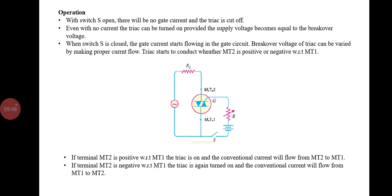In the operation: when switch S is open, there is no gate current and the triac is cut off. Even with no gate current, the triac can be turned on if the supply voltage becomes equal to the breakover voltage. When switch S is closed, gate current starts flowing into the gate circuit. The breakover voltage of the triac can be varied by controlling the gate current flow. The triac starts to conduct whether MT2 is positive or negative with respect to MT1. If MT1 is positive with respect to MT2, the triac switches on and conventional current flows from MT2 to MT1. If MT2 is negative with respect to MT1, the triac again switches on and conventional current flows from MT1 to MT2.